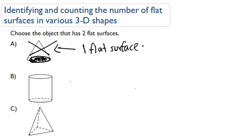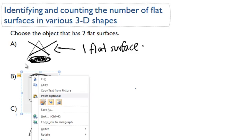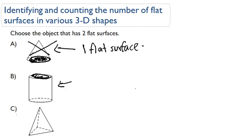Alright, how about this next one? This is a cylinder. The top of the cylinder, like a can, that's flat. And so is the bottom, down here. So the bottom is flat, too. So this has exactly two flat surfaces, and this would be our correct answer.